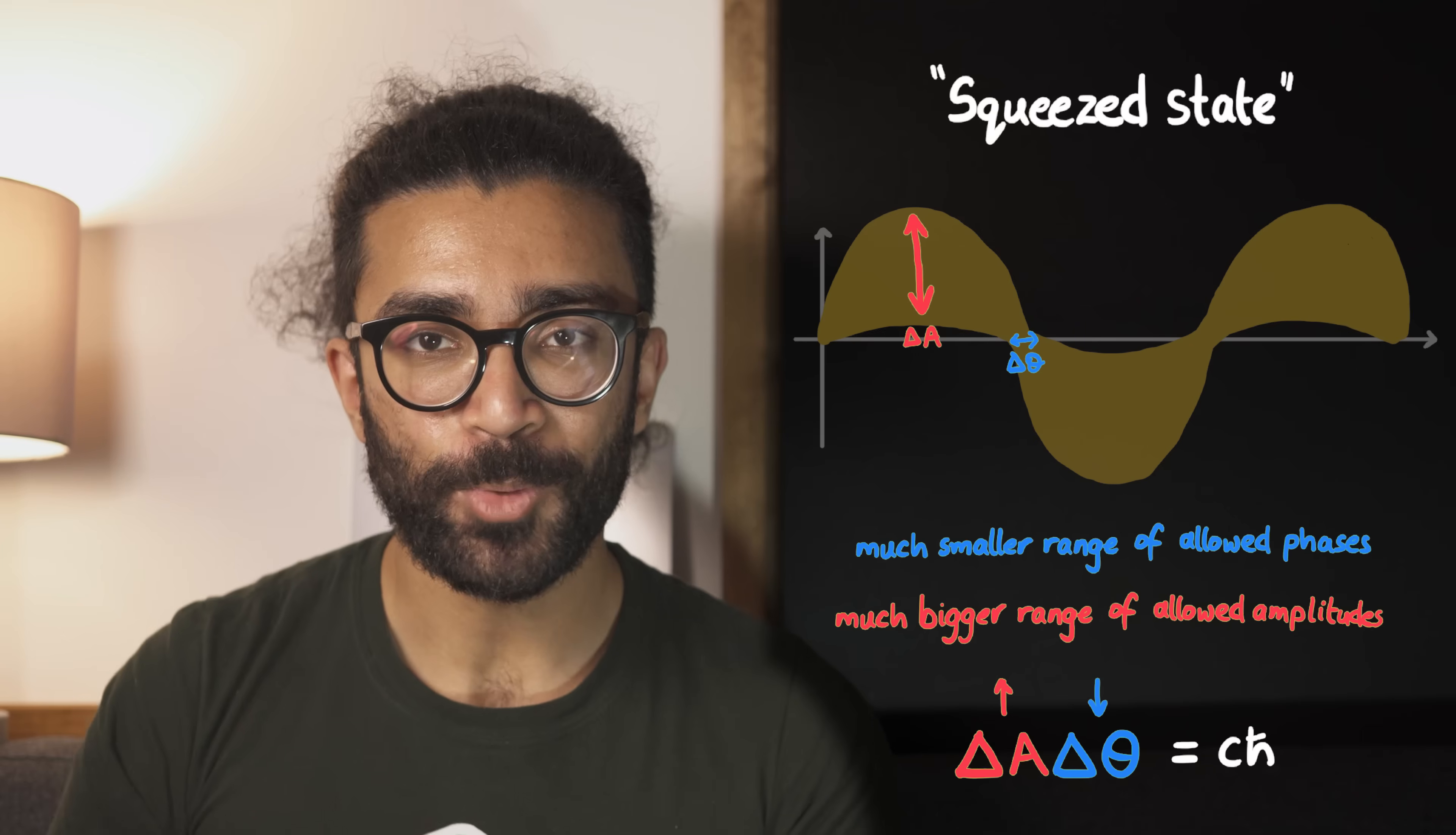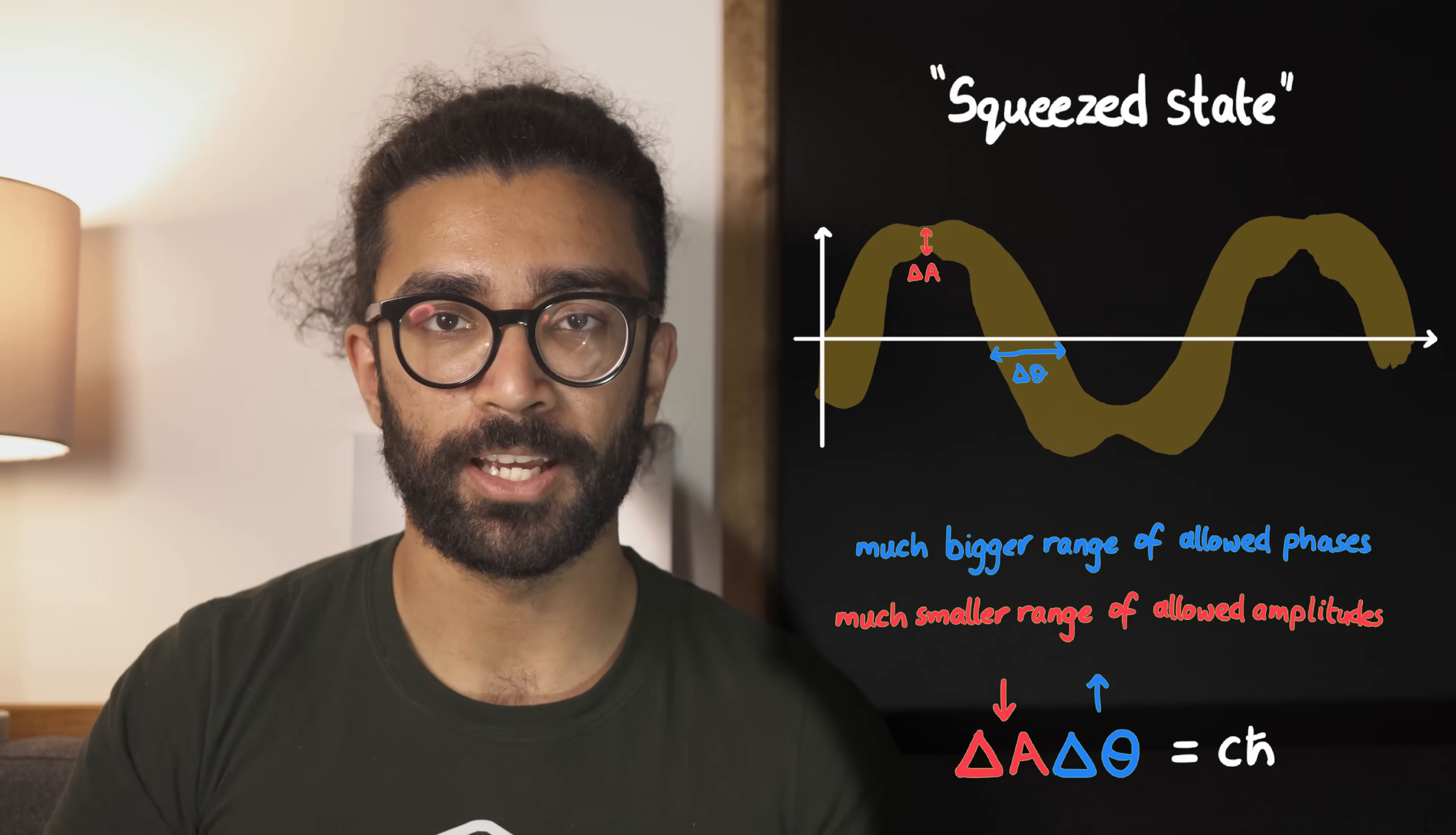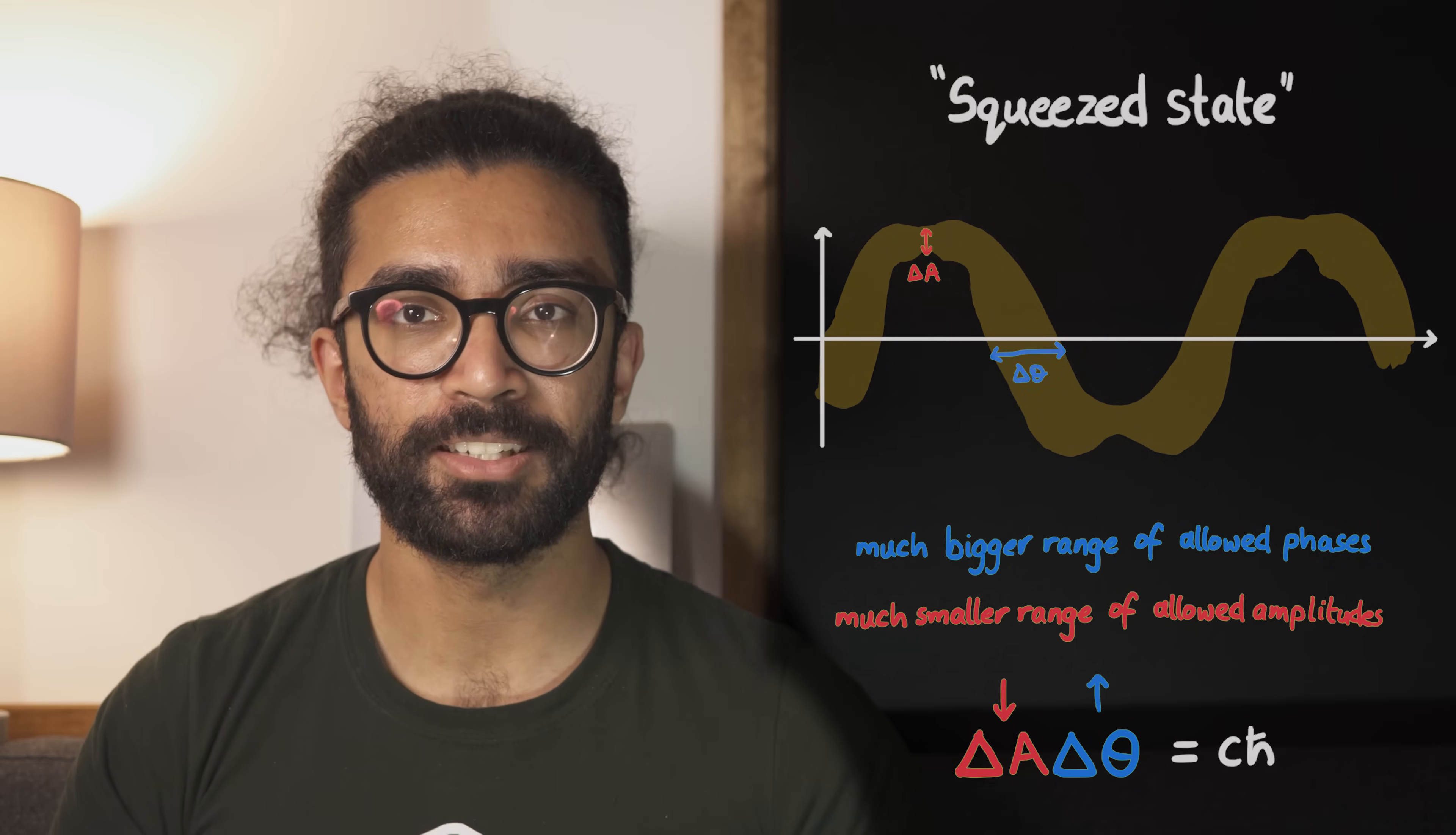And interestingly, we can actually squeeze waves in the other quantity as well, in amplitude, reducing its uncertainty, and the uncertainty in the phase increases to compensate. So the product of the uncertainties of the two quantities is at least the minimum allowed value. Basically, we've just seen two ways to manipulate the uncertainty relation to create new and interesting quantum states.